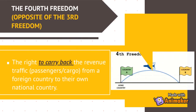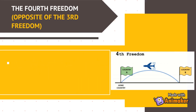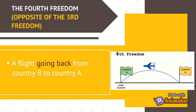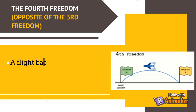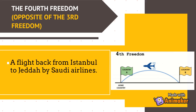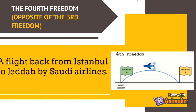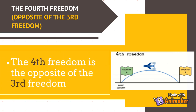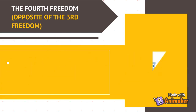The fourth freedom is the right to carry back revenue traffic — passengers and/or cargo — from a foreign country to their home country. A flight going from country B back to country A. For example, a flight back from Istanbul to Jeddah by Saudi Airlines. The fourth freedom is the opposite of the third freedom.